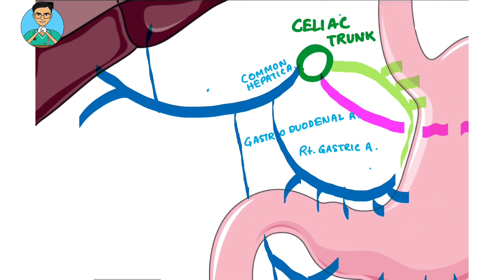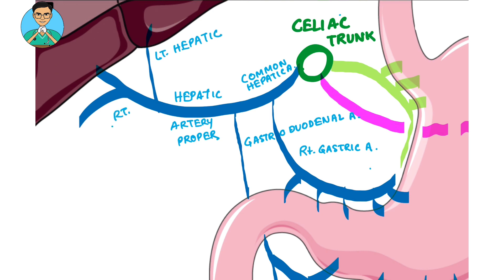After giving off these two branches, the common hepatic artery is known as the hepatic artery proper. The hepatic artery proper gives off two main branches: one for the left lobe of the liver known as the left hepatic artery, and another for the right lobe of the liver known as the right hepatic artery.